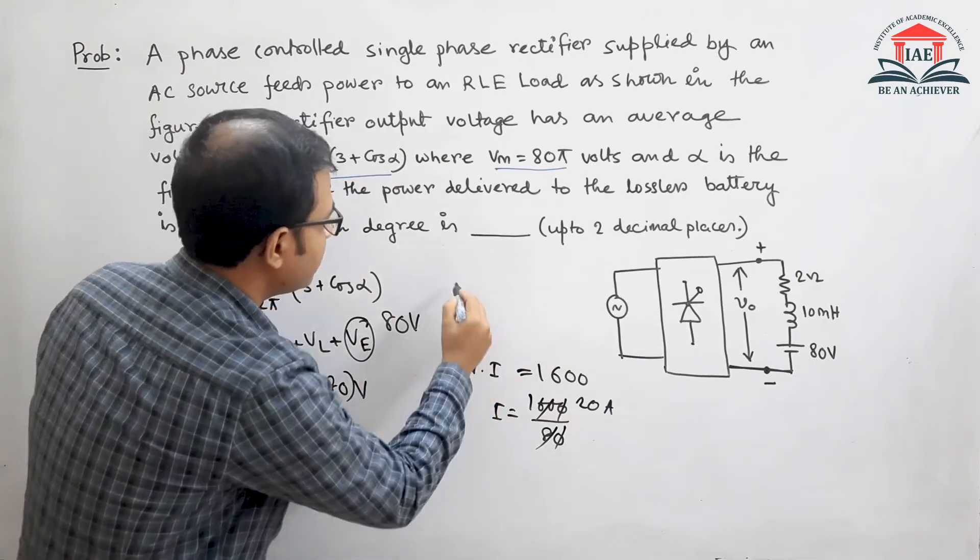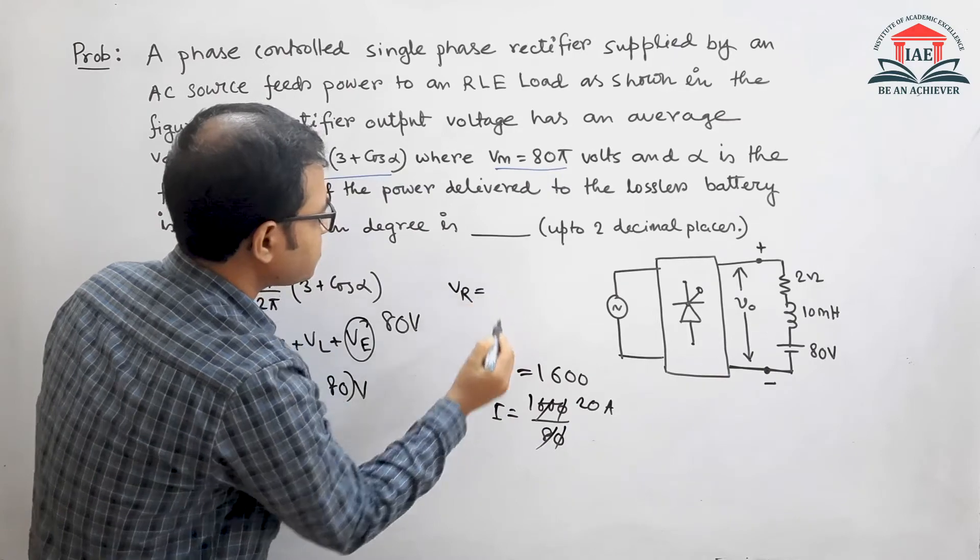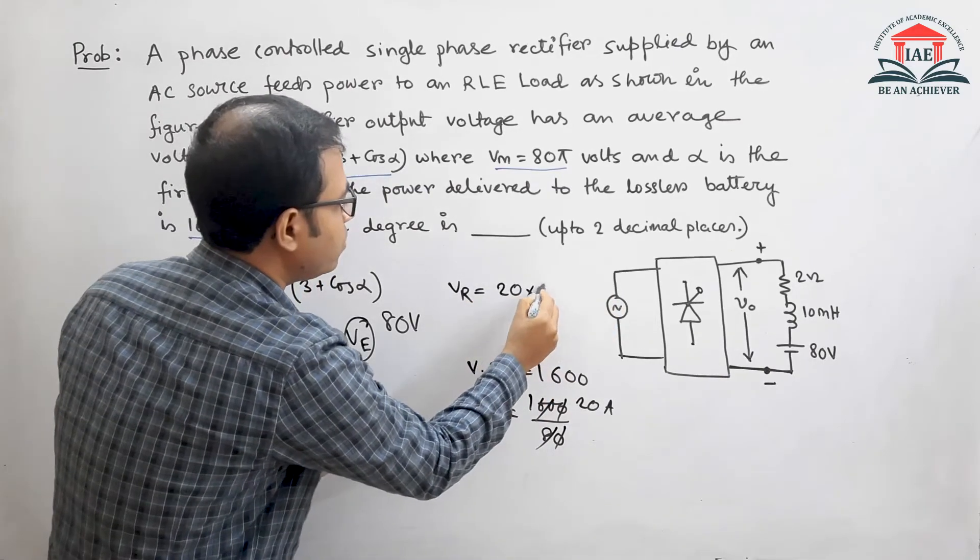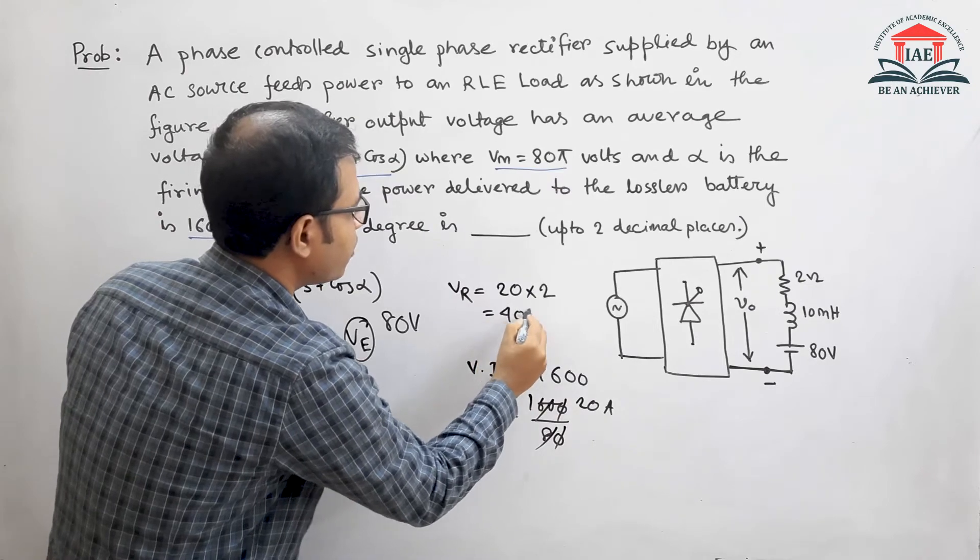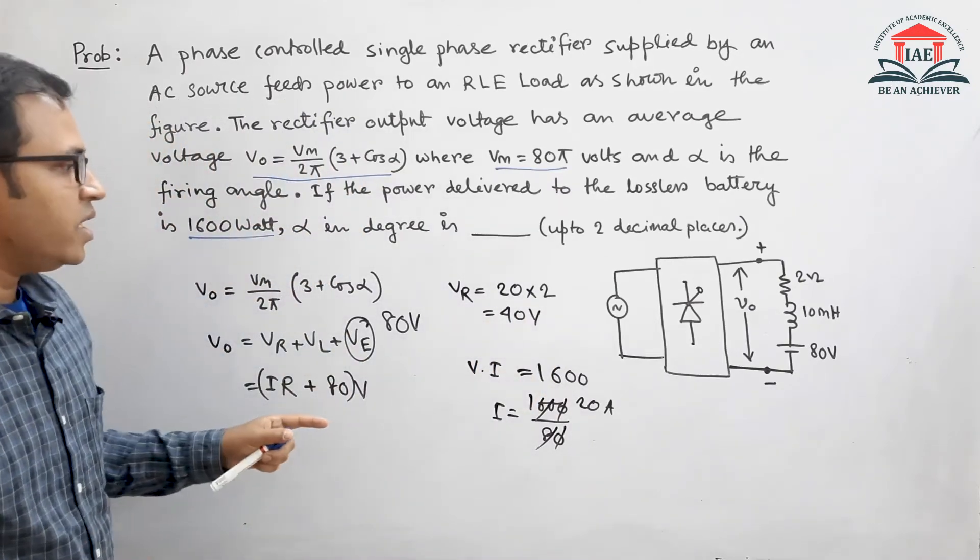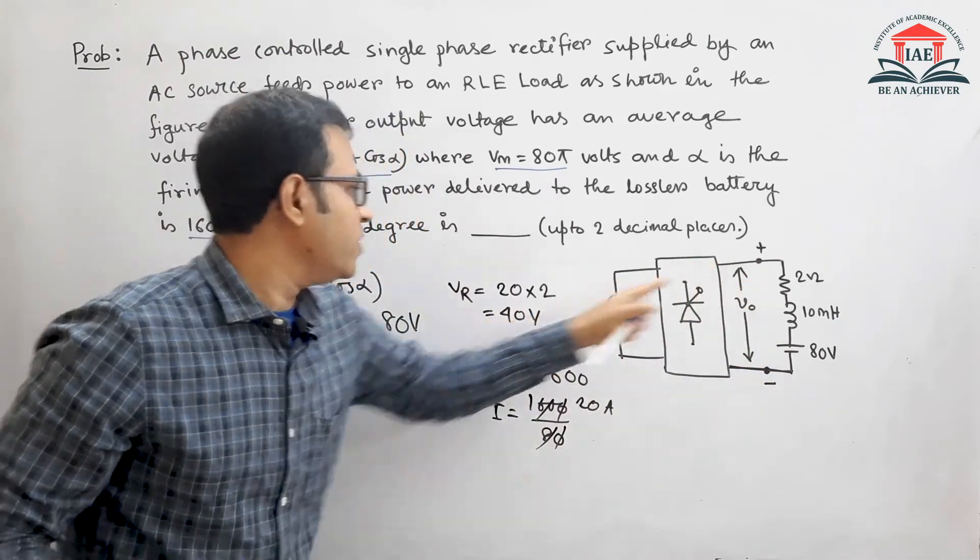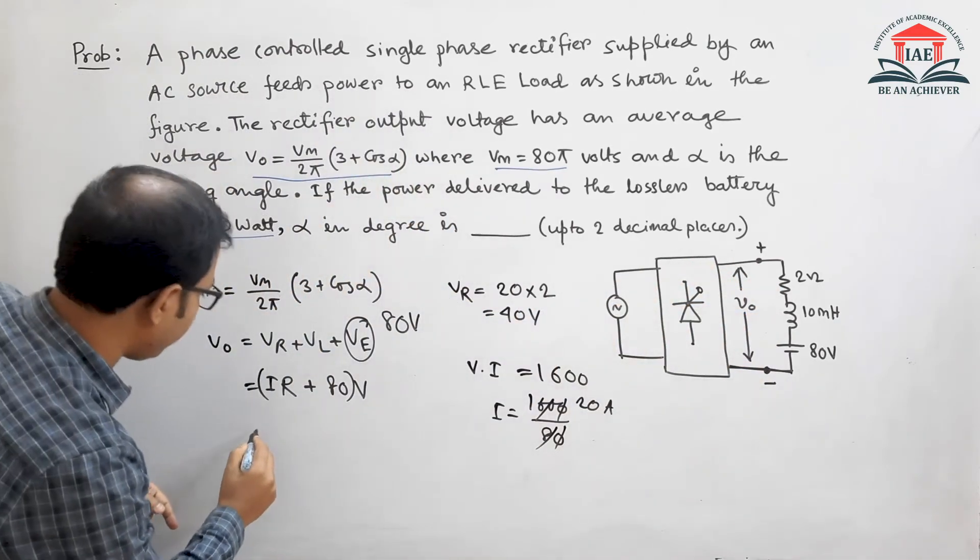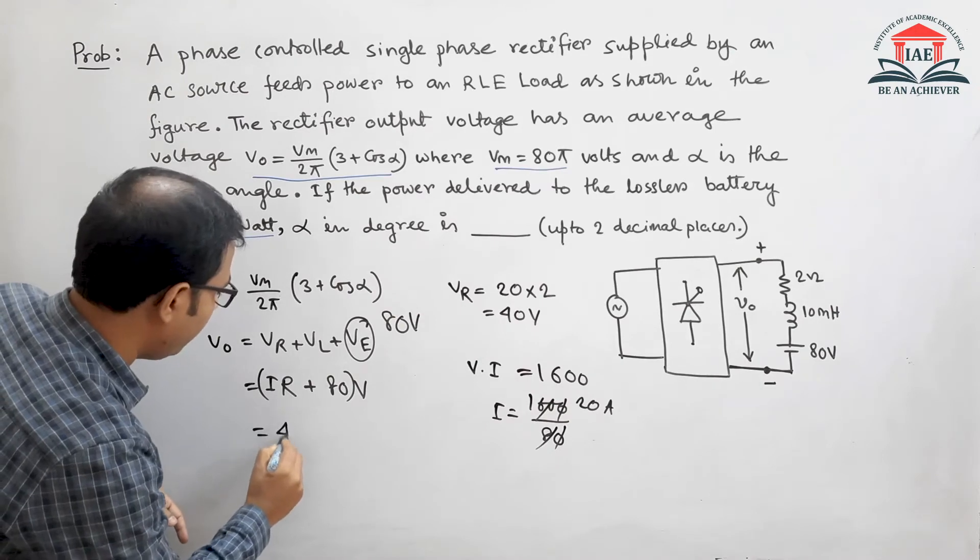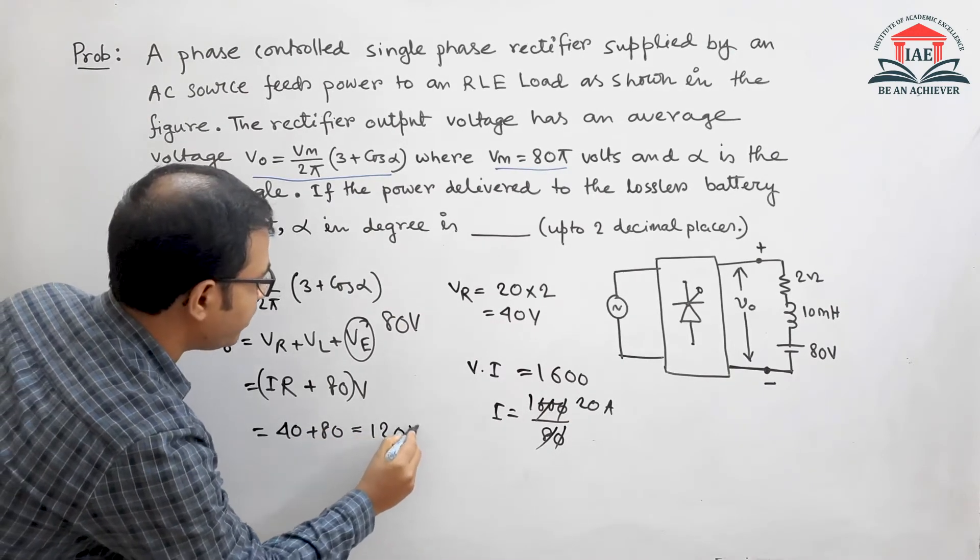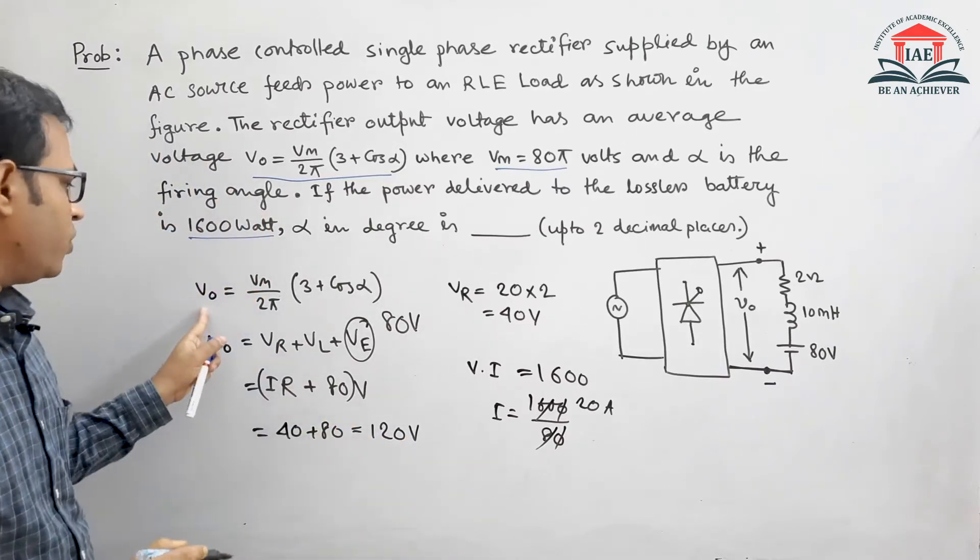So what will be Vr? Vr must be I into R, so 20 into 2 equals 40 volts. Now 80 volts is known to us, 40 volts is known to us. So the output voltage, the total voltage, will equal 40 plus 80 equals 120 volts. So this is our output voltage.